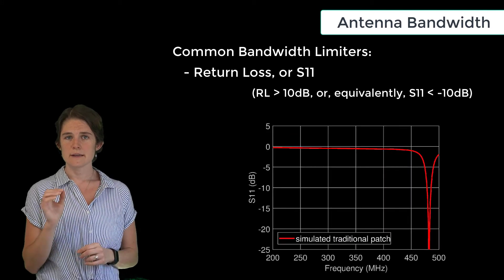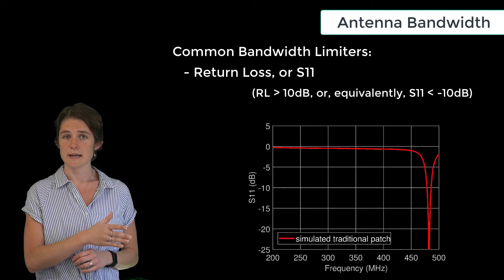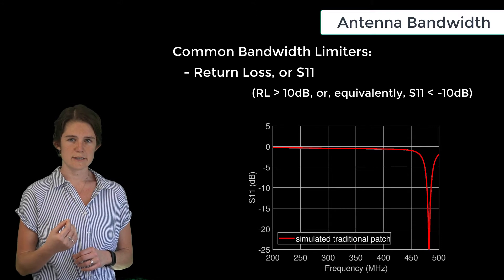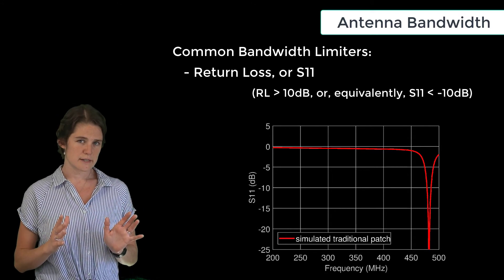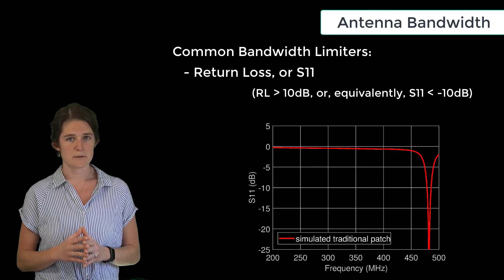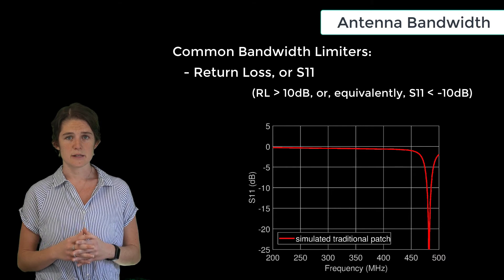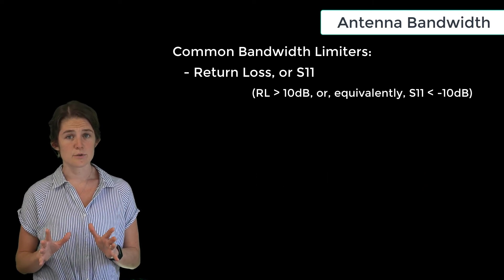For the graph shown here, the antenna's simulated S11 is below negative 10 dB from about 470 MHz to 490 MHz. So this antenna might be considered to have a 20 MHz bandwidth, or a percent bandwidth of approximately 4.2 percent.